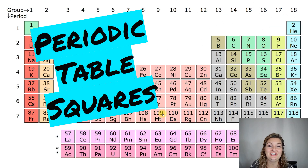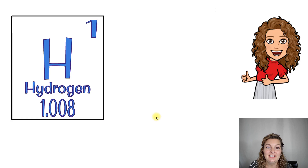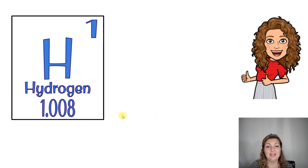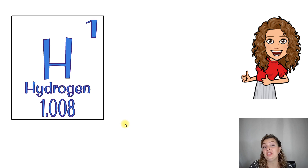Hey everybody, Mrs. Bodishan here. So today we're talking all about the squares on the periodic table. First up, let's look at the first square — it's going to be hydrogen — and we're going to look at each component individually and learn what they are and how we can use them to find some data.